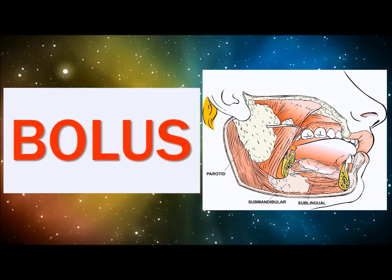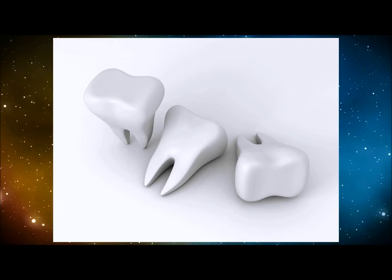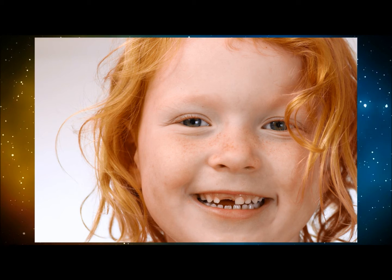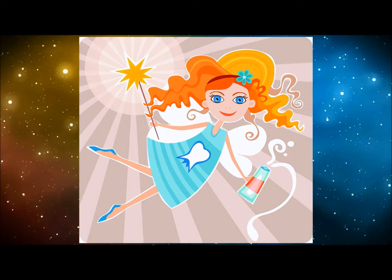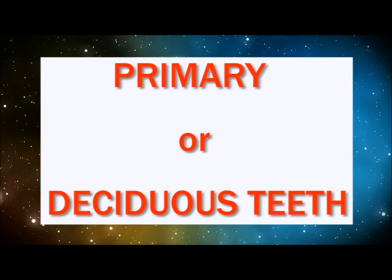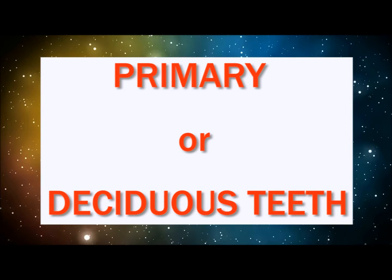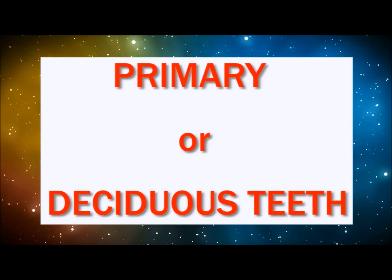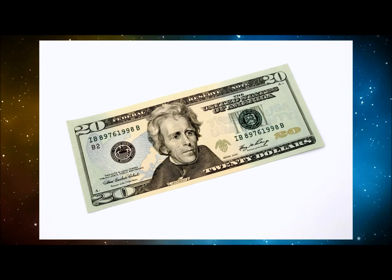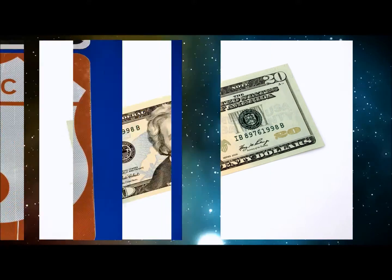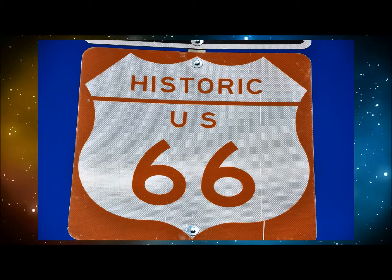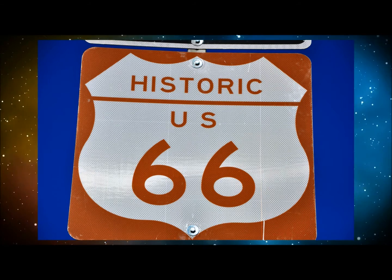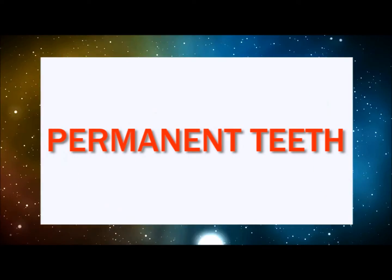Last but not least, we have our teeth. The teeth that the tooth fairy took are called the primary or deciduous teeth — there are 20 deciduous teeth. If we remember historic Route 66, the first six reminds us that the primary teeth start coming out at six months of age, and the second six reminds us that the permanent teeth make their appearance at six years of age.